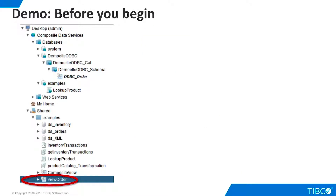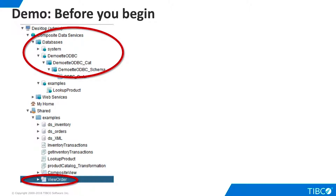Before you begin this demo, make sure you have the appropriate published resource for your ODBC client connection. No car file is required for this demo. Simply publish the order view that is delivered with Studio in the examples folder. Publish as a database using the data source, catalog, and schema shown here. You should always use a catalog when publishing an ODBC data source, because the DSN definition asks for one, as we will see later.